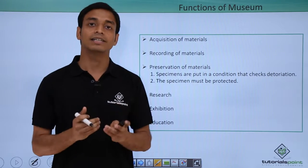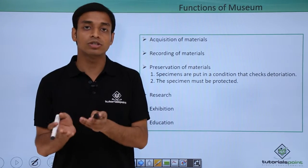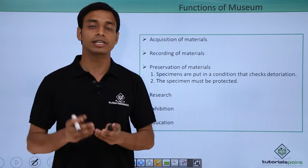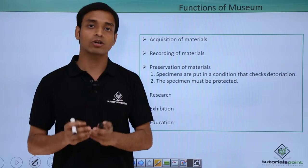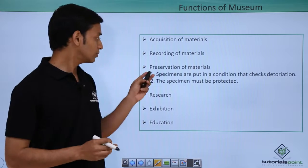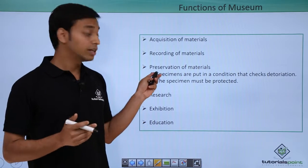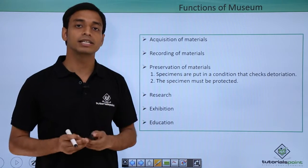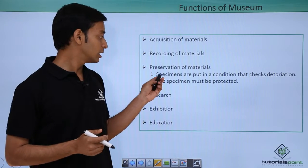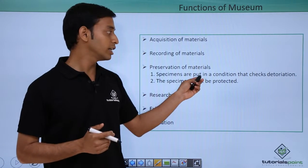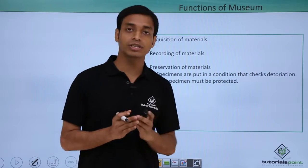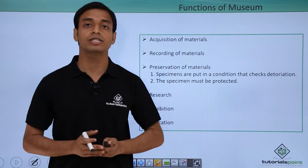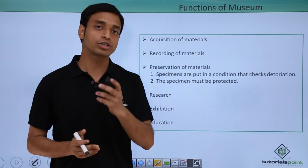The detailed animal species, their classifications, the taxonomic categories, and every detail — those records are kept in museums. Preservation of materials is also done; this is basically done in two steps. First, specimens are put in a condition that checks deterioration, meaning we put specimens in such a condition that they should not deteriorate or rot.